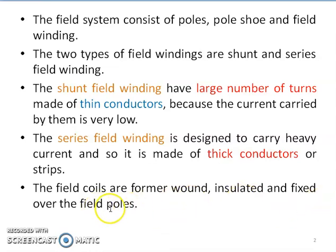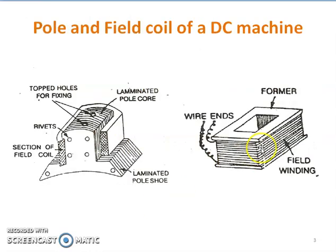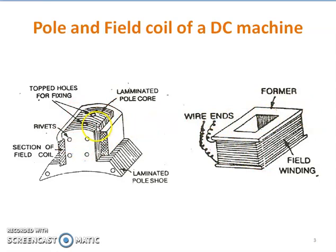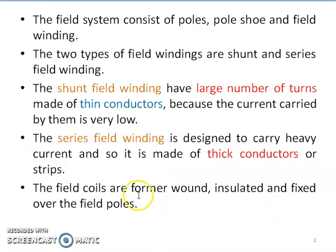The field coils are former wound, insulated, and fixed over the field poles. Depending upon the number of turns to be put in the field winding, coils are first formed on the former, then those coils are directly put on the pole body. Outside the machine, winding is formed using standard formers, and after removing coils from the former, they are put on the body of the pole.